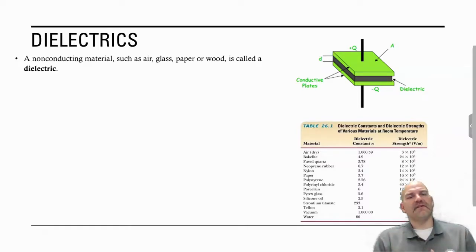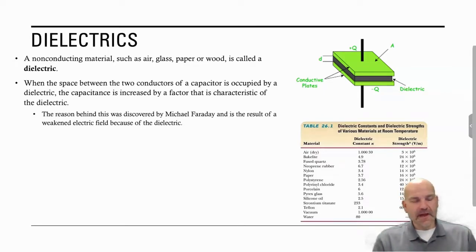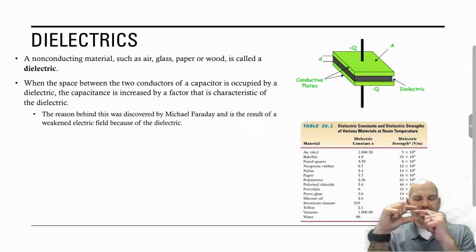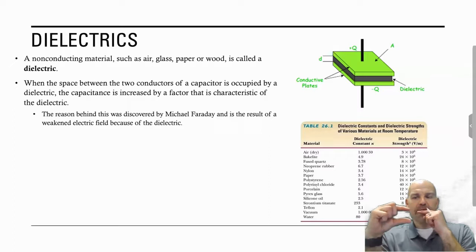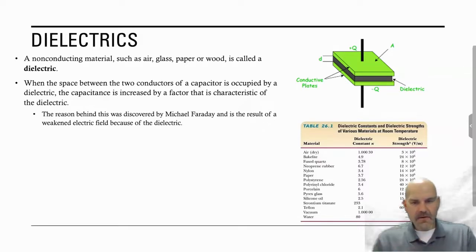A dielectric is just any non-conducting material, such as air, glass, paper, and wood. In the last video when we looked at capacitors, the dielectric inside those capacitors was air. We take that gap between the two conductors, between the parallel plates, and we put something in between it. Here in this video, we're going to focus on putting something in between it, where in the last video that something was air.